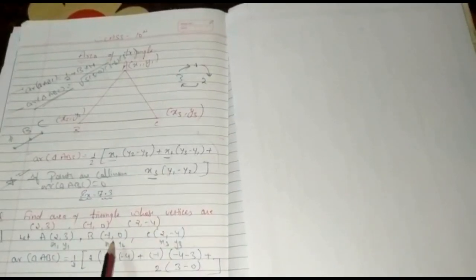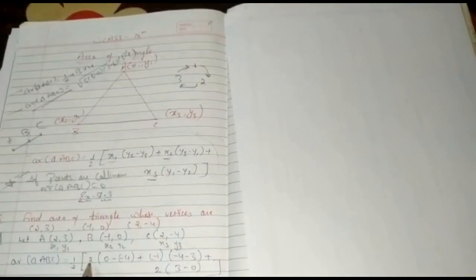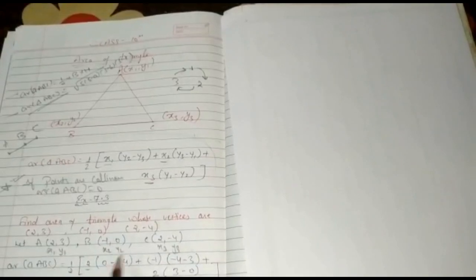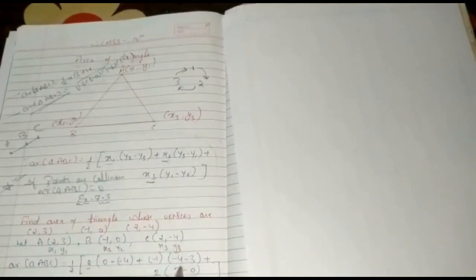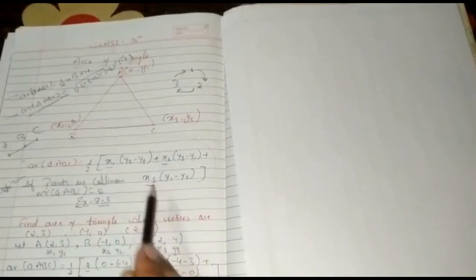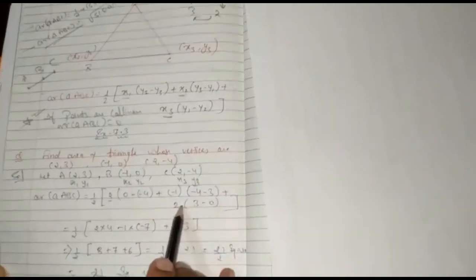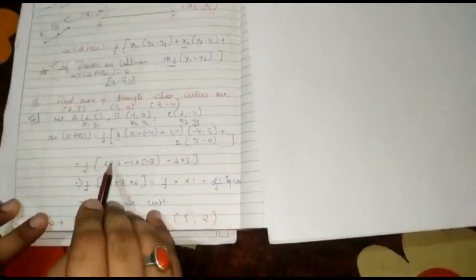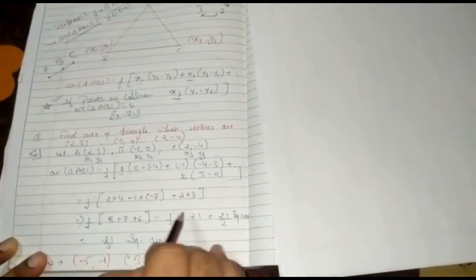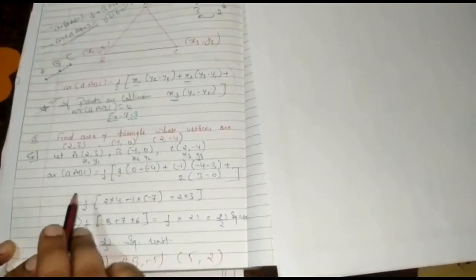Applying the formula: area = half times x1(y2 − y3) + x2(y3 − y1) + x3(y1 − y2). Substituting: x1 = 2, y2 = 0, y3 = −4, so y2 − y3 = 0 − (−4) = 4. Then x2 = −1, y3 − y1 = −4 − 3 = −7. Then x3 = 2, y1 − y2 = 3 − 0 = 3. So area = half times (2×4 + (−1)×(−7) + 2×3) = half times (8 + 7 + 6) = 21/2 square units. Therefore, the area of triangle ABC is 21/2 square units.